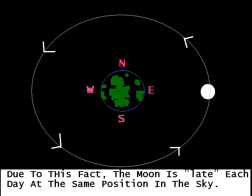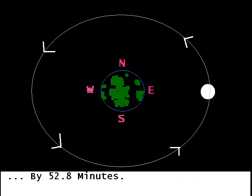Due to this fact, the moon is late each day at the same position in the sky — by 52.8 minutes, so it's about an hour late.